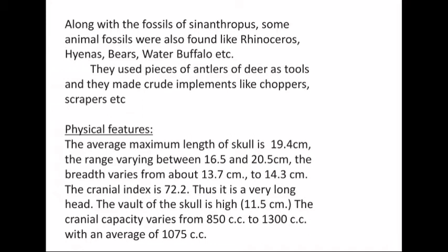Physical features of Sinanthropus: The average length of their skull is 19.4 cm, which ranges between 16.5 to 20.5 cm. The breadth of their skull ranges between 13.7 cm to 14.3 cm. The cranial index of their skull is 72.2 dolichocranial, thus it is a very long head. The cranial vault of their skull is 11.15 cm.